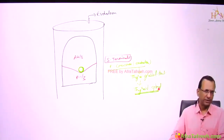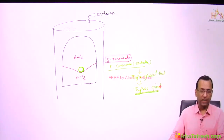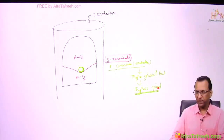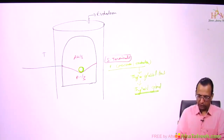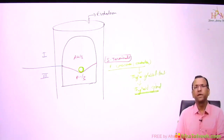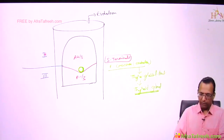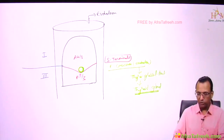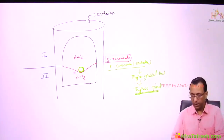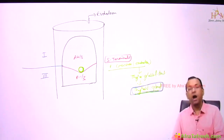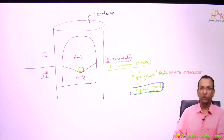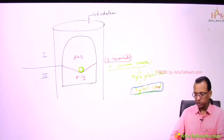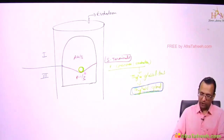The question is: thyroid gland develops at the junction of which arch? The anterior two-thirds of the tongue develops in the first arch and the posterior one-third develops in the third arch. The second arch would have disappeared at the foramen cecum. So the answer is: thyroid gland develops at the junction of the first and third arch.